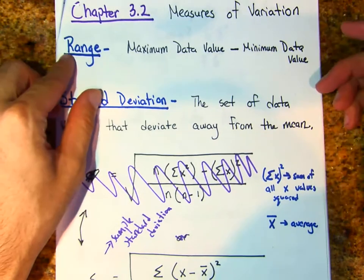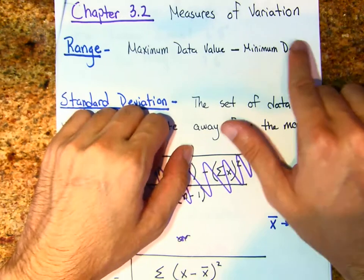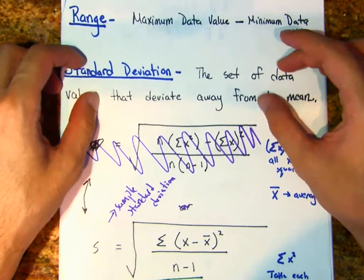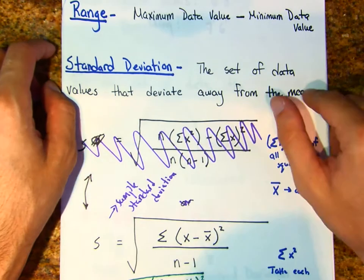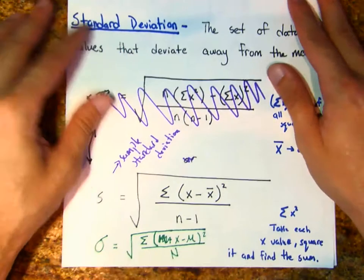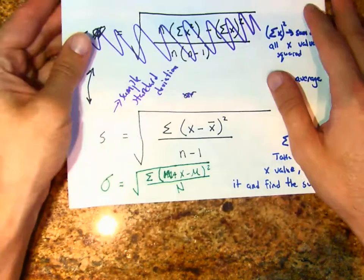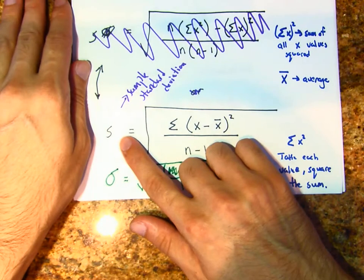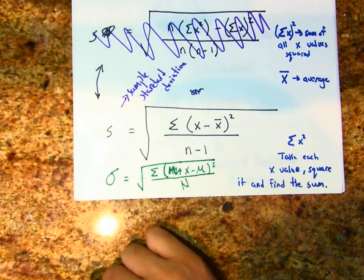First, let's have this in our notes: the range is the maximum data value minus the minimum data value. Standard deviation is the big topic for this lesson — it's the set of data values that deviate away from the mean. This is the sample standard deviation, written with a little s.